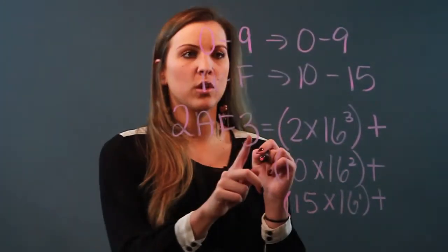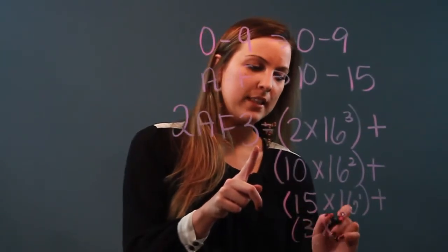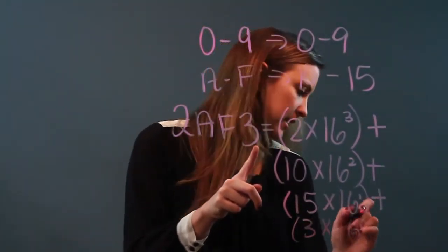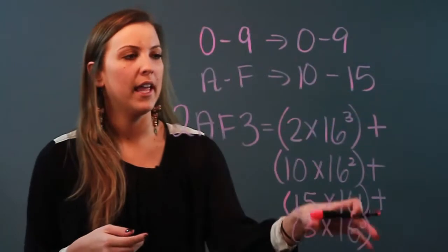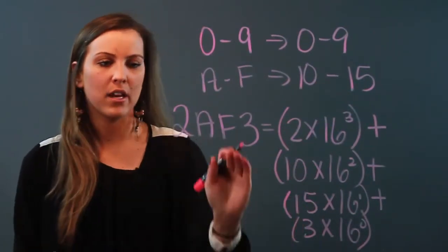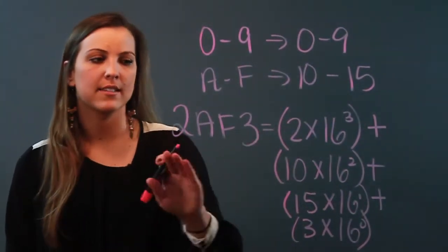plus my last term is 3, so that's going to be 3 times 16 to the 0 power. And I go ahead and simplify all that and then I'll have the number that corresponds to this hexadecimal arrangement.